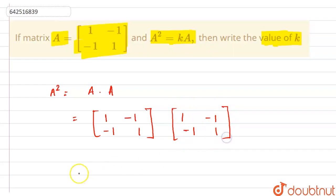So after multiplying, we get that the first element will be 1 times 1 plus minus 1 times minus 1. 1 times 1 plus minus 1 times minus 1. So this will be 2.